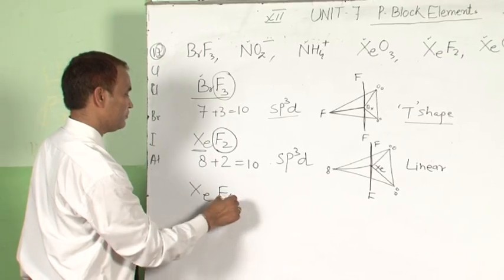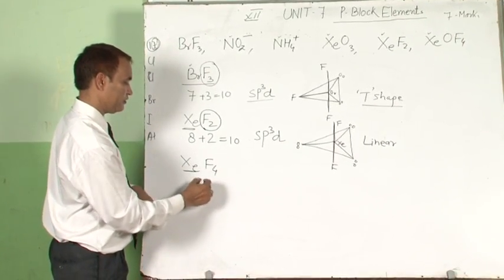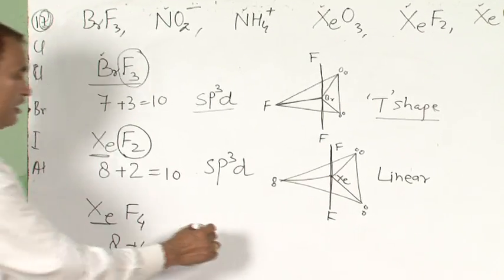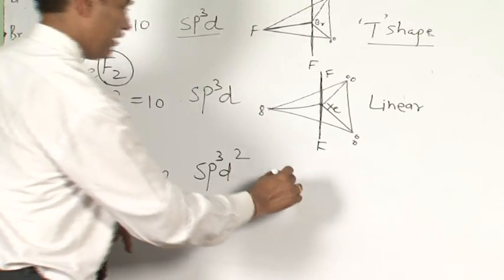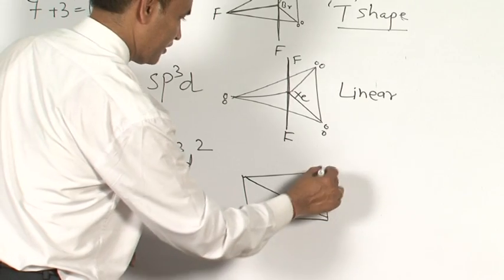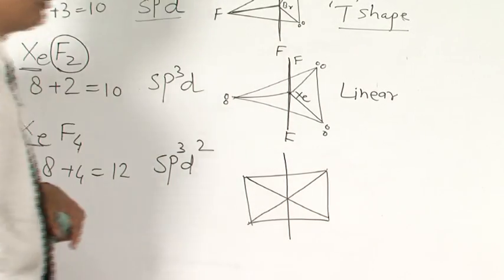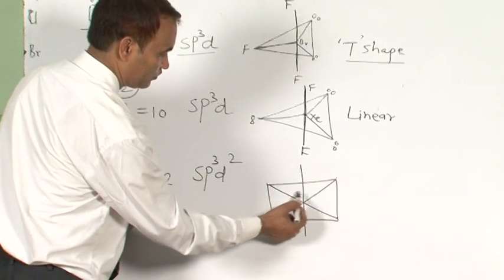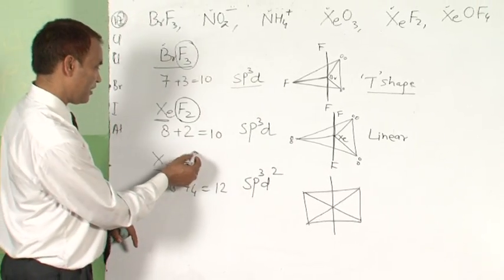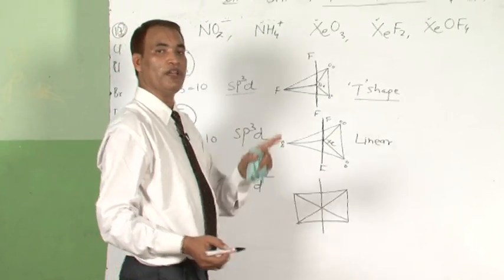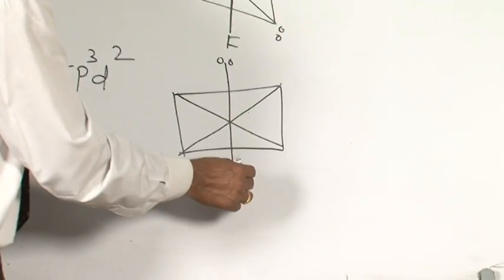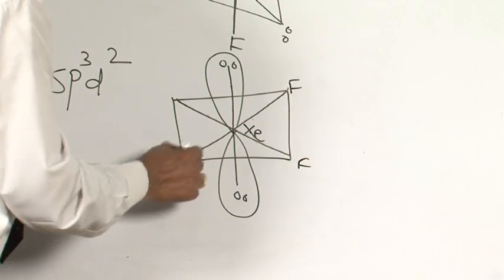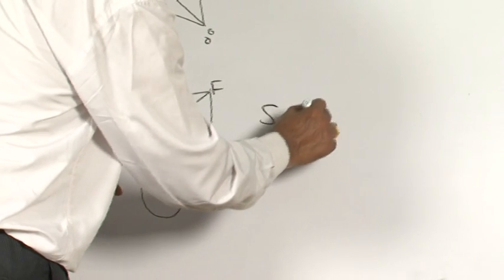Similarly, XeF4: xenon is Group 18, so 8 outermost electrons plus 4 bonding atoms equals 12. For 12, hybridization is SP3D2 and the regular geometry is octahedral. There should be 6 bonds total, but the bonding atoms are only 4, meaning there are 2 lone pairs of electrons. In octahedral geometry with 2 lone pairs, the shape is square planar. So the central atom Xe with 4 F atoms gives square planar shape.